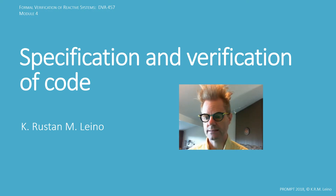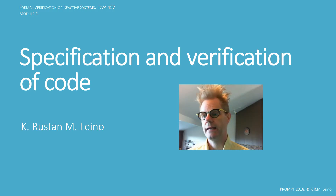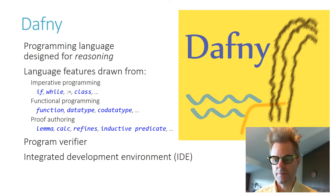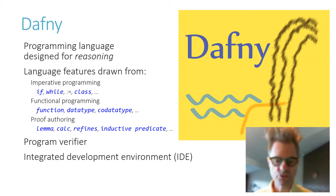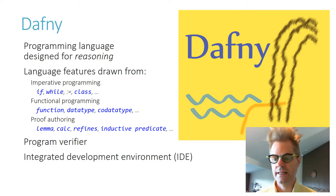This time, we're going to look at a standard computer science algorithm, binary search, and we're going to look at writing and verifying it. We're doing the work in Daphne, which is a programming language designed for reasoning. It has features like arrays and loops, which are what we're going to use, and it also has specifications like pre- and post-conditions and invariants, and it has a verifier that we'll make use of.